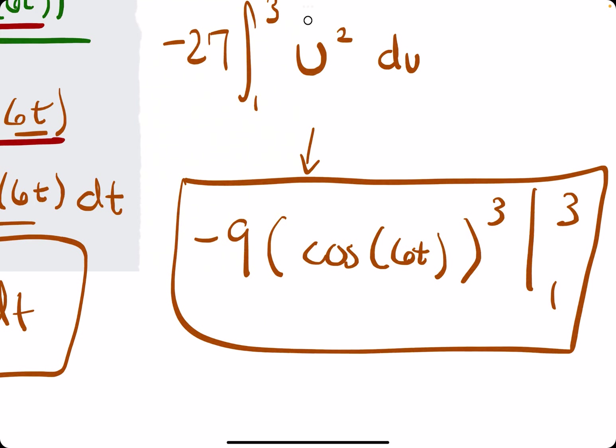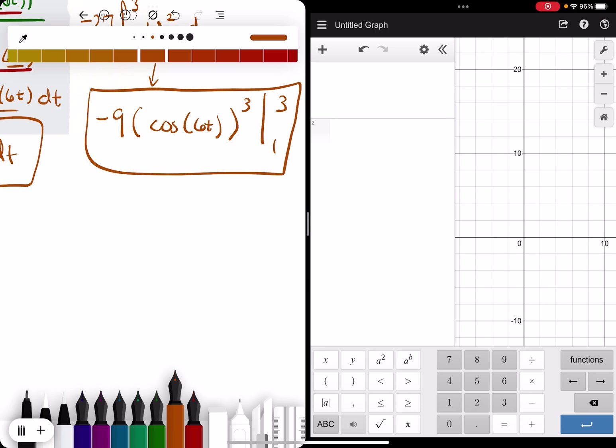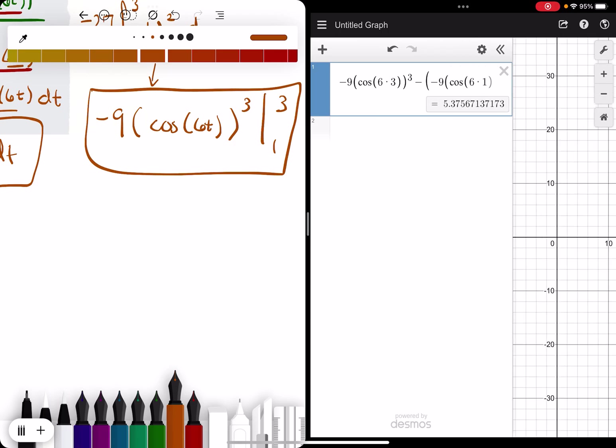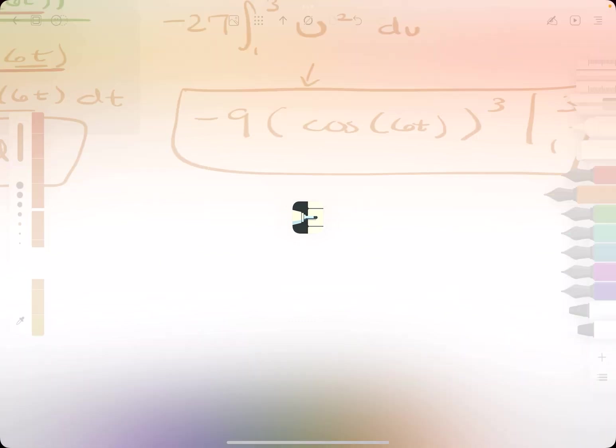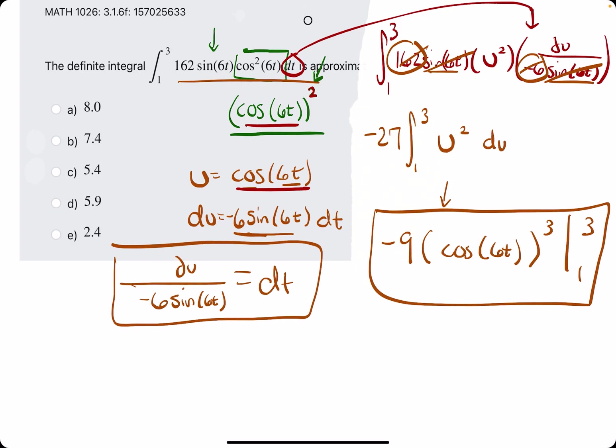So, like I mentioned before, I would just jump straight into Desmos, plugging this in. We plug in the 3 first. So, we'll do negative 9 in parentheses, cosine, 6 times 3. And then, all of that cosine is being cubed. And that's the 3 evaluation. And then, we do minus, in parentheses, negative 9. We still keep that negative. Minus a negative. Eventually we'll make that positive, right? So, then, negative 9, parentheses, cosine of 6T, or 6 times 1. Close that off again. And then, cube that cosine value. And then, close off that final set of parentheses. So, all together, we have 5.37. 5.38, maybe. 5.38, or 5.4.